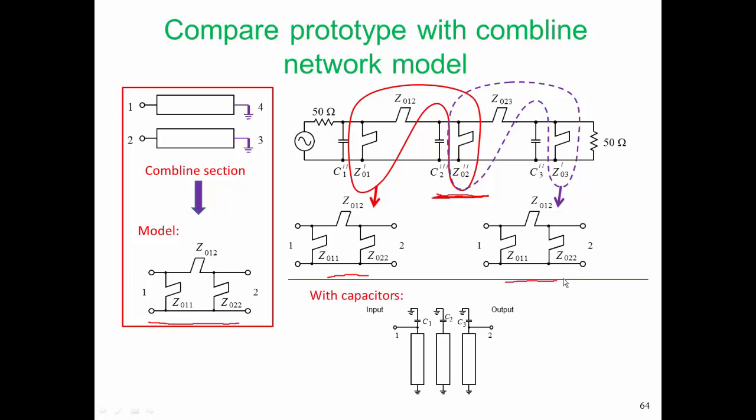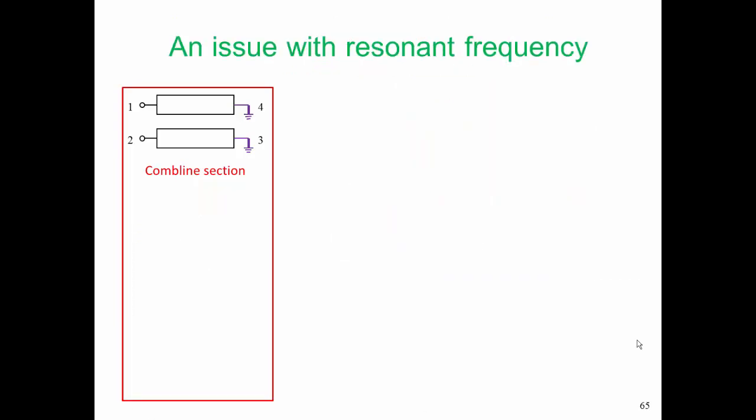Now if we add in our capacitors, this is the form of the parallel coupled line filter that we're going to end up with. Now there is an issue with resonant frequency, and we need to address that here. With the combline section, we used a model which consisted of a pi arrangement of shorted stubs. And with this model, FR was equal to F0. That was our assumption when this was developed.